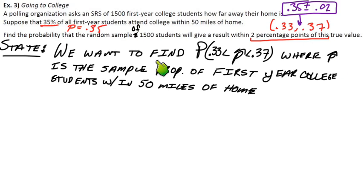And then the only thing we need to be really clear about is what the heck is P-hat? So let's use our context here. So where P-hat would be the sample proportion of first-year college students within 50 miles of home.